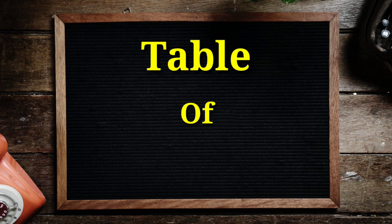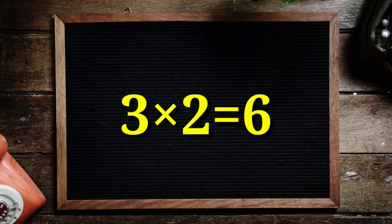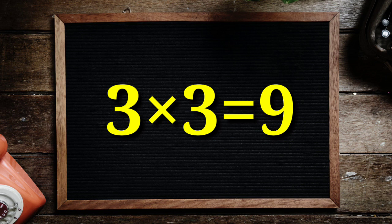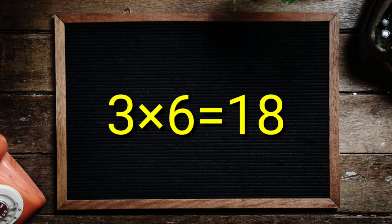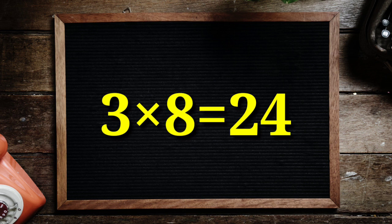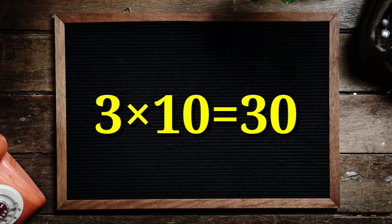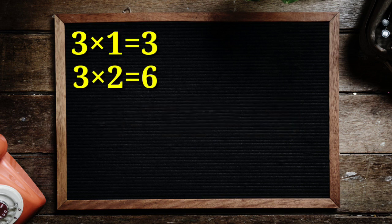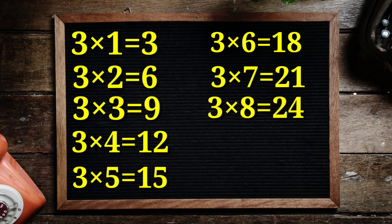Table of 3: 3 1's are 3, 3 2's are 6, 3 3's are 9, 3 4's are 12, 3 5's are 15, 3 6's are 18, 3 7's are 21, 3 8's are 24, 3 9's are 27, 3 10's are 30.